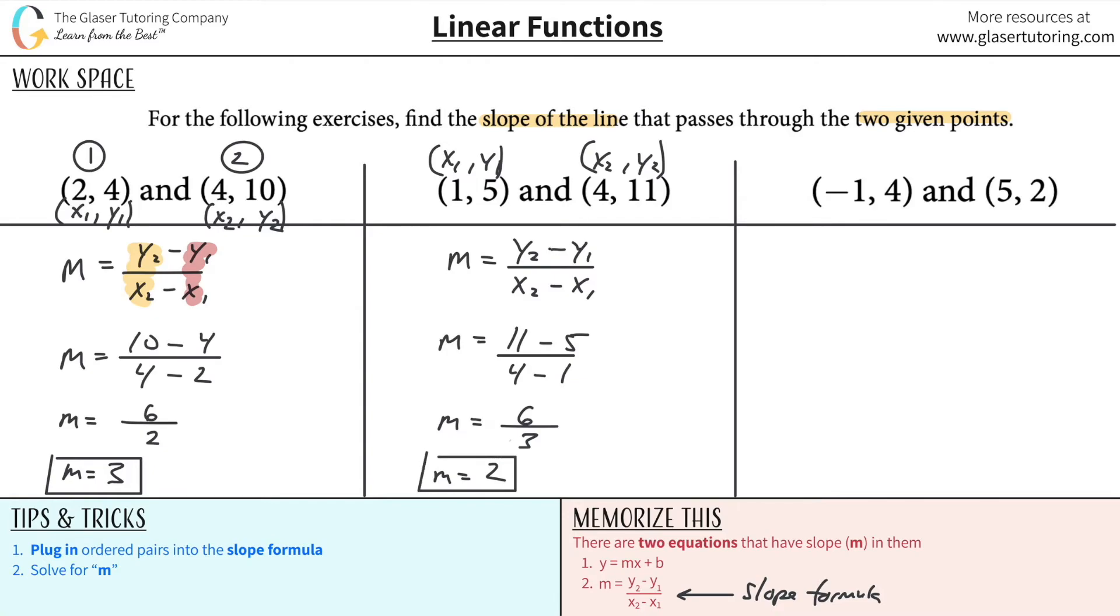Last but not least, give this one a shot. Pause the video. Give it a shot. And see if your answer matches with mine. So here. x1, y1. x2, y2. Let's write out the formula for slope. Slope is equal to y2 minus y1, all divided by x2 minus x1. So now what we simply have to do is plug in the values.